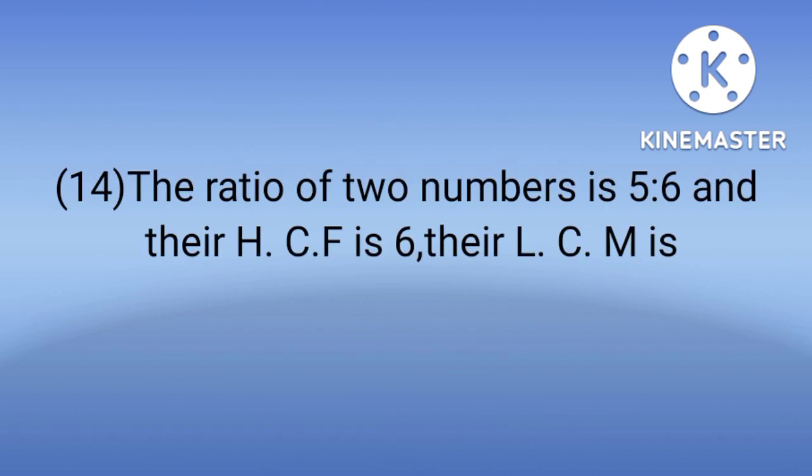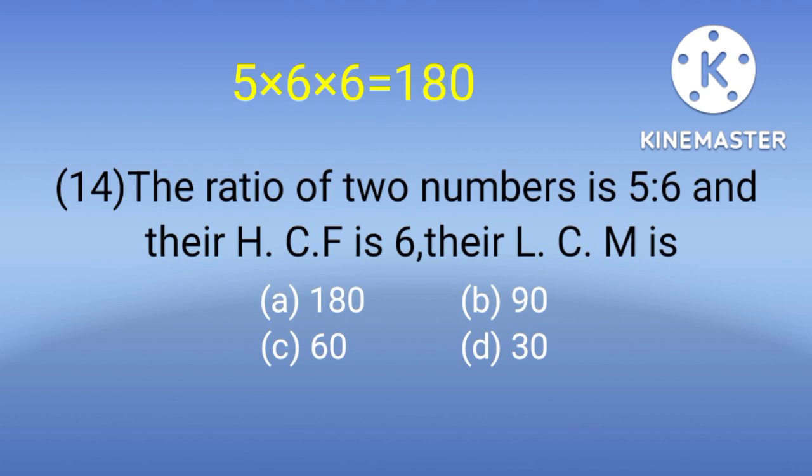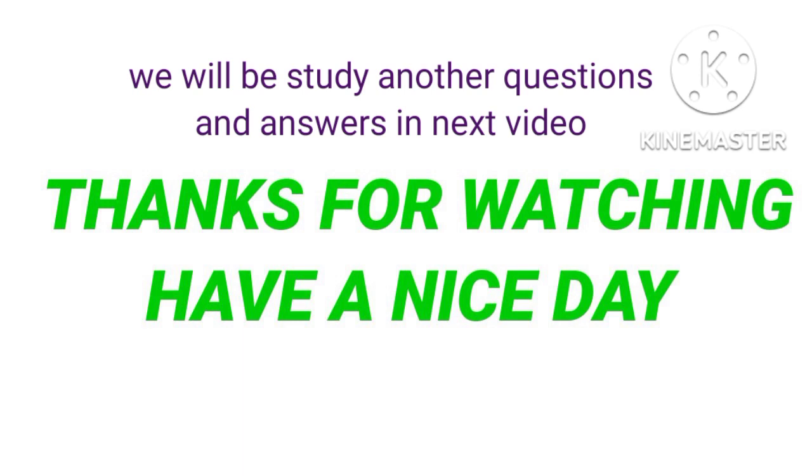Number 14: This is another type of question that may come in exams. The ratio of 2 numbers is 5 is to 6 and their HCF is 6. What is their LCM? Options are 180, 90, 60 and 30. What do we do with this type of question? We multiply the three numbers together - meaning 5, 6 and 6. Multiplying these three numbers gives us the answer. So the answer is A, 180. We multiply these three numbers together.